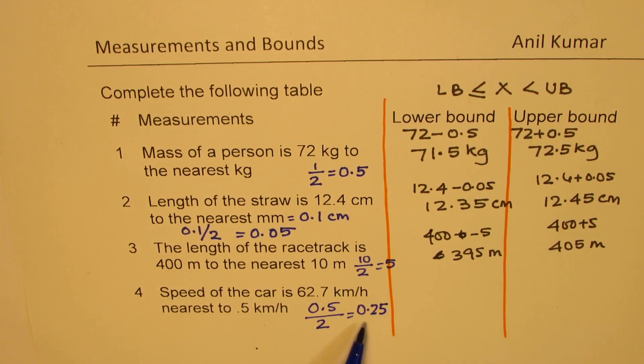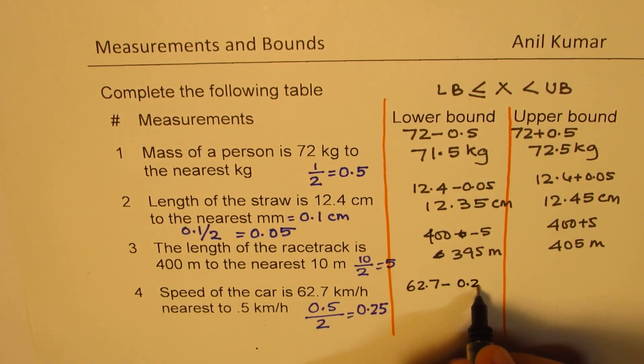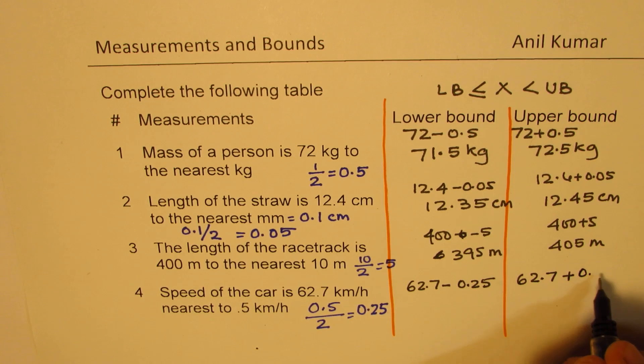So we have to add and subtract 0.25, perfect. So what we get here is 62.7 minus 0.25 quarter, right? And here we have 62.7 plus 0.25.